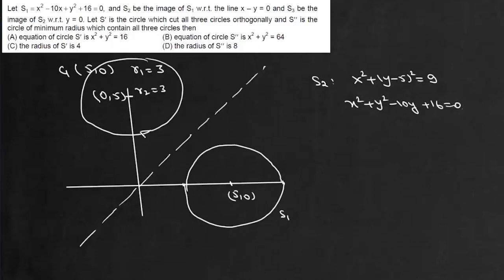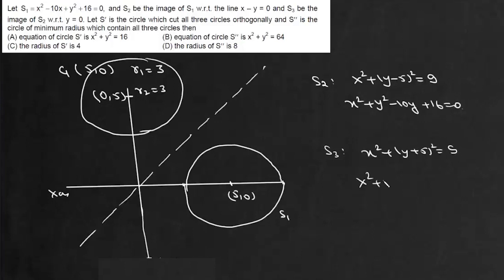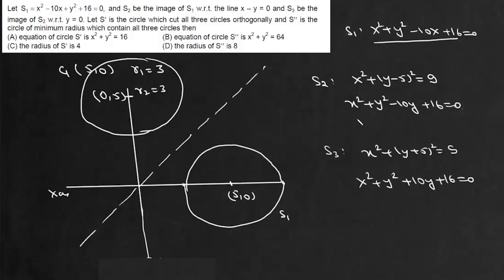S3 is the image of S2 with respect to y equals 0, so S3 is the image with respect to the x-axis. It will be x² + (y + 5)² = 9, or x² + y² + 10y + 16 = 0. So we have three circles: S2 which is x² + y² − 10y + 16 = 0, and S3 which is x² + y² + 10y + 16 = 0.